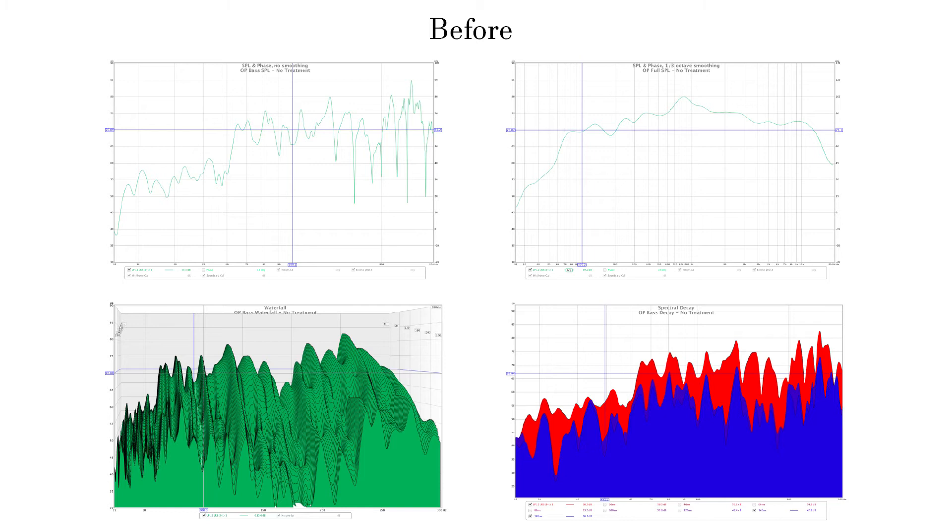This first image is my room's response before any treatment, typical of most rooms. The upper left is the unsmoothed bass response where we're up 10 decibels at 140 Hertz and down 22 decibels at 150 Hertz. In the upper right we have the third octave smoothed full SPL. Not bad but we're up 10 decibels at 750 Hertz.